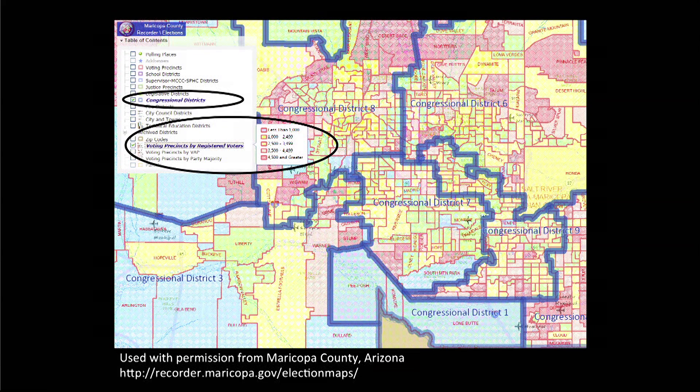This is a map of Maricopa County in Arizona using 2012 census data — you're looking at the greater Phoenix area. There are a couple of map layers selected. One is the congressional districts, outlined in blue. The other is voting districts by registered voters, with different shading to indicate different concentrations of voters. Toward the top, the red indicates 4,500 or greater, and the blue patterns indicate fewer than a thousand.